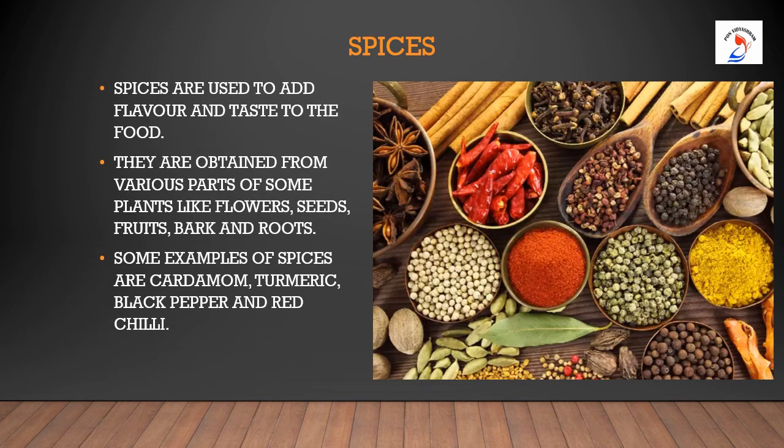Next comes the interesting part — spices. Have you ever tasted a hot biryani children? It will be very tasty and spicy. How do we get that taste? From the spices. Spices are used to add flavor and taste to food. They are obtained from various parts of some plants like flowers, seeds, fruits, bark and roots. Some examples of spices are cardamom (elachi), turmeric, black pepper and red chili. Can you observe the long sticks there? That is cinnamon — an example of bark taken from a tree. Clove is a flower bud, as you can see in the picture.